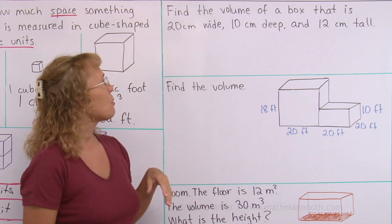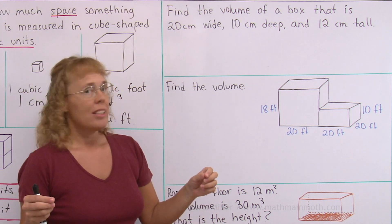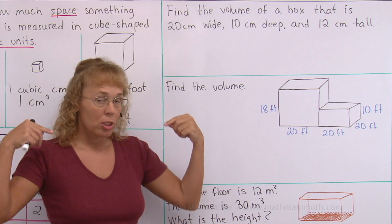Find the volume of a box that is 20 cm wide and 10 cm deep this way and then 12 cm tall.